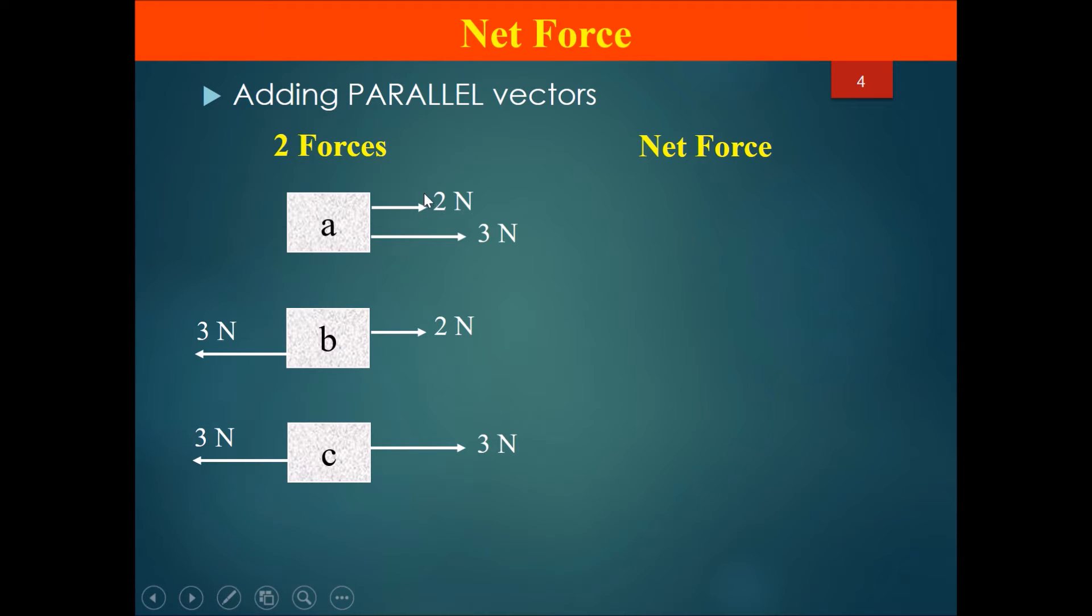For A, there are two forces acting on A. One of it is two newtons, and another one of it is three newtons, and these two are pulling both in the same direction. So the total force acting on A, the answer would be five newtons. This is because if they are pulling in the same direction, they are helping each other, and therefore their forces can be added to each other.